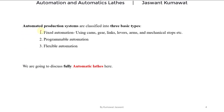Automated production systems are classified into three basic types: first is fixed automation, second is programmable automation, and third is flexible automation.